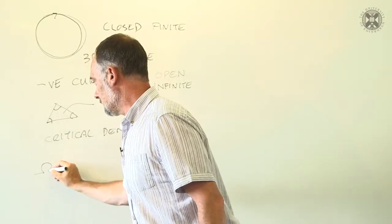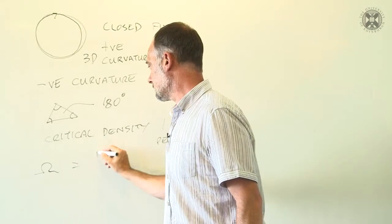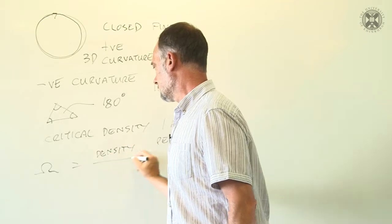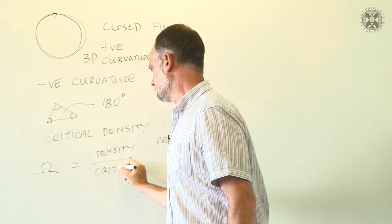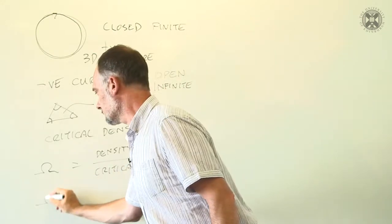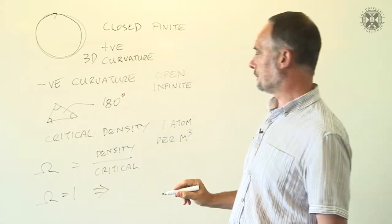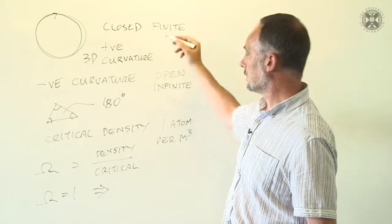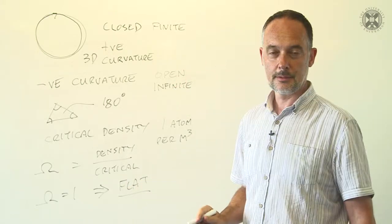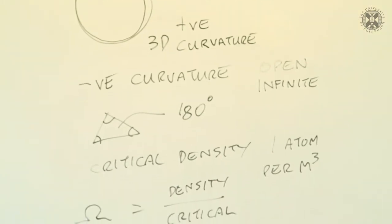And every now and then you might see the symbol omega, which is the density divided by this critical value. And so we would say that omega equals one tells us that you're on a universe at the boundary between open and closed, which is flat. And strangely enough, from modern observations, this is where we seem to be.